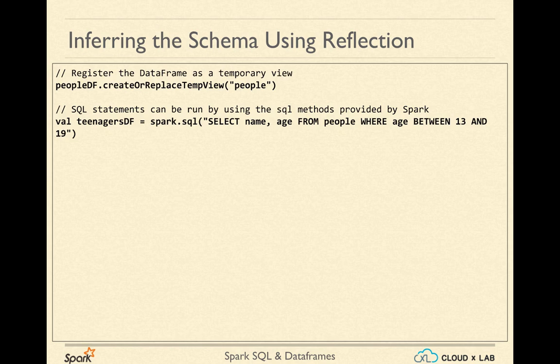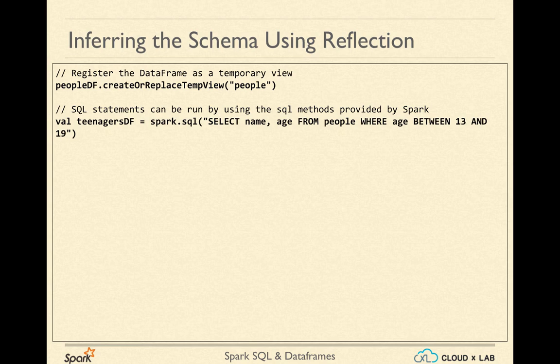Once we have created the DataFrame from our unstructured data using the reflection technique over RDD, we can run the DataFrame operations as usual. We can register it as a temporary view, and on this temporary view, we can run SQL queries as usual using the SQL function of Spark context. Here, the SQL query results in teenagerDF, which is a DataFrame having people whose age is between 13 and 19.